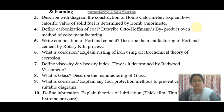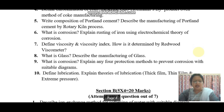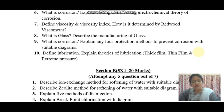Write the composition of Portland cement. Describe the manufacturing of Portland cement by Rotary Kiln Technology, also known as the RKT process — this is the most important question and you will definitely find it in your examination. What is corrosion? Explain rusting of iron using the electrochemical theory of corrosion. Define viscosity and viscosity index, and how it is determined by the Redwood viscometer. What is glass? Describe the manufacturing of glass. Explain any four protection methods to prevent corrosion with suitable diagrams. Define lubrication and explain the theories of lubrication, which include thick film, thin film, and extreme pressure lubrication.